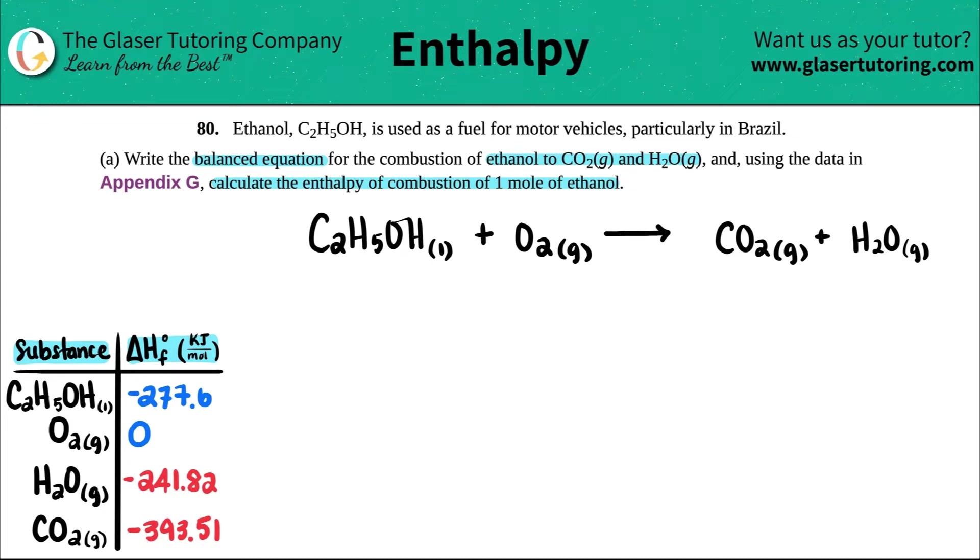Okay. So now just writing it isn't good enough. We just have to make sure that it's balanced. So if you want, pause the video just to see if you can balance it and then check with my answer. But I'm just going to go from here. I got two carbons, so I need to put a two in front of here. I have five plus one hydrogens. I got a total of six. So I'm going to put a three here.